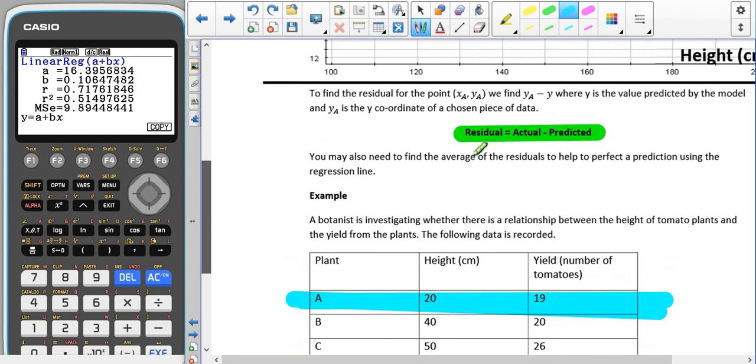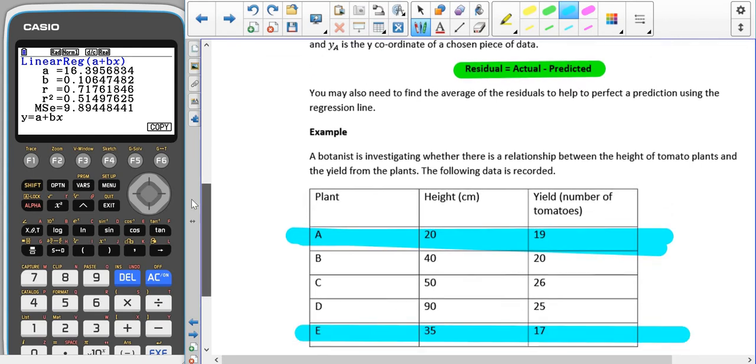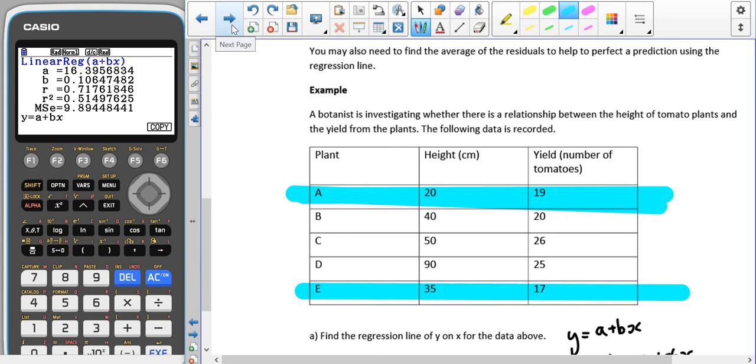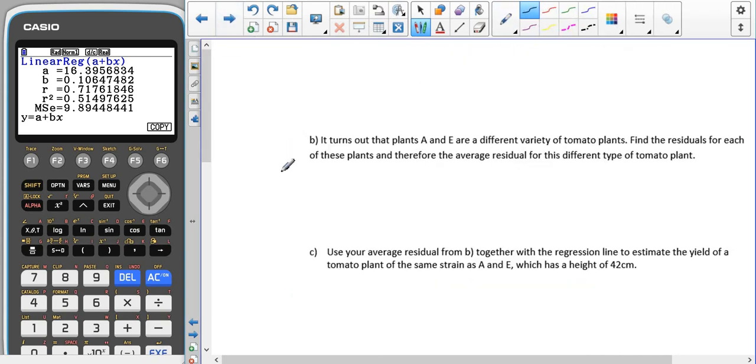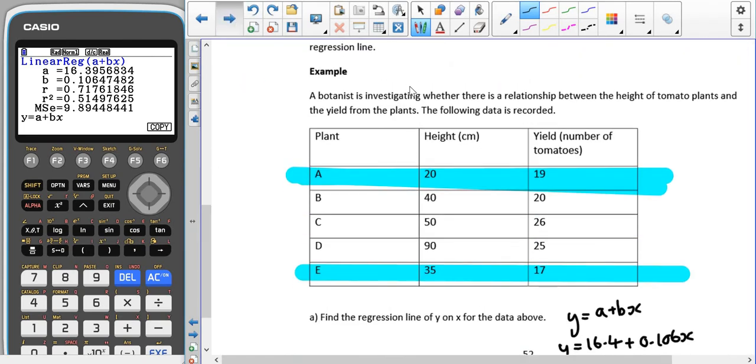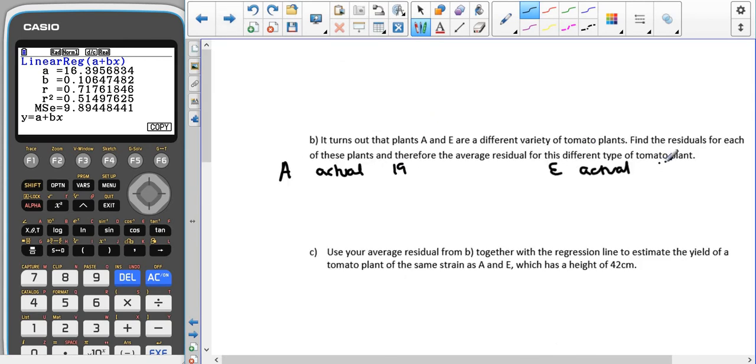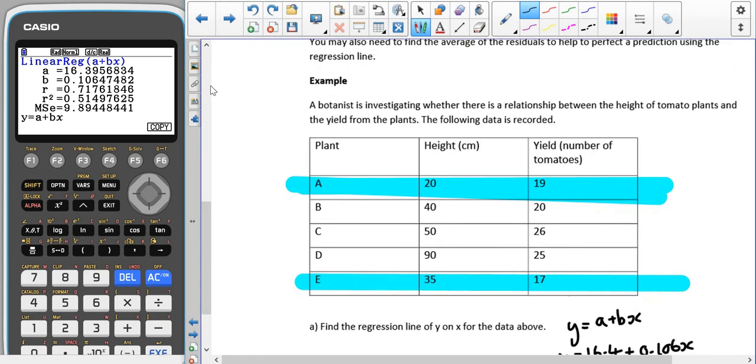We're going to use our equation for finding the residual: actual minus predicted. For A, the actual is 19. For E, the actual is 17. The predicted we're going to get from using our regression line: y equals 16.4 plus 0.106x. For A, the x value is 20.